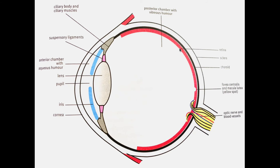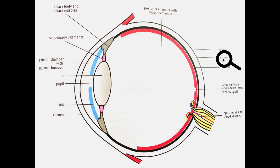The sclera is the outermost covering — it is the white of our eye and is made up of very dense connective tissue. It covers all of the eyeball except for the exposed portion at the front, where it is clear and known as the cornea. The function of the sclera is to protect the inner parts of the eye and to give shape to the eyeball.